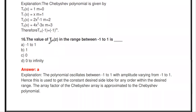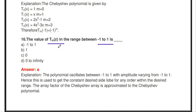The value of Tₘ(z) in the range −1 to 1: the polynomial oscillates between −1 and 1 with amplitude varying from −1 to 1. For z values between −1 and 1, Tₘ(z) has a minimum amplitude of −1 and a maximum amplitude of 1.